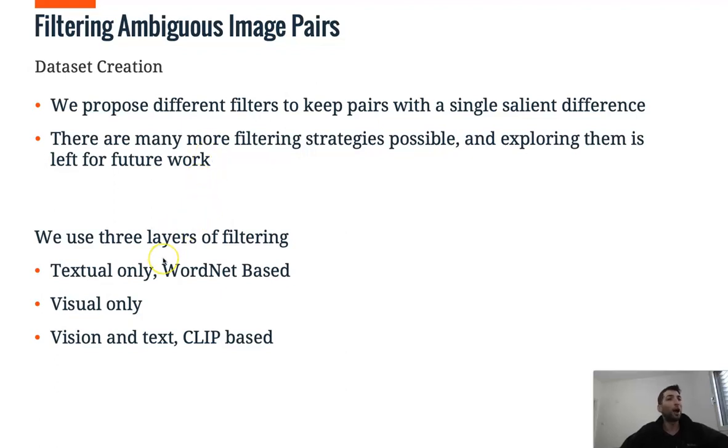where we filter hypernyms like dog to puppy and more. Visual only, where we filter cases where the different key or different item between the pairs is too small to notice. And perhaps the most interesting one is the visual and text filter, which is CLIP-based, which we will now see.